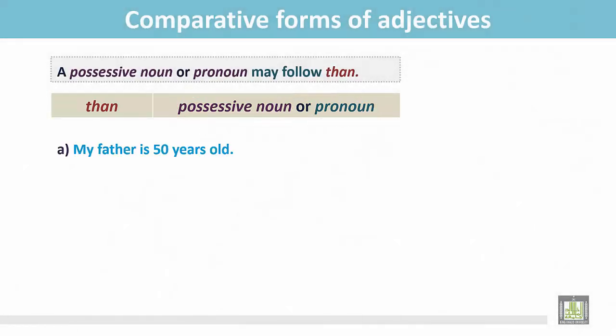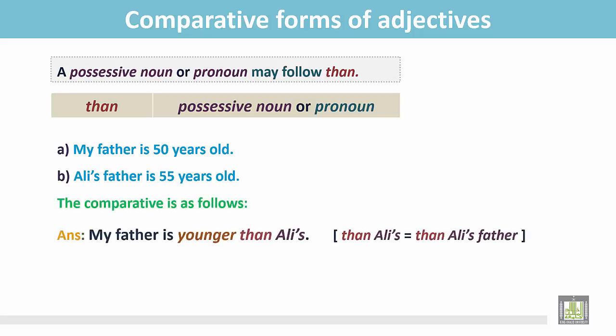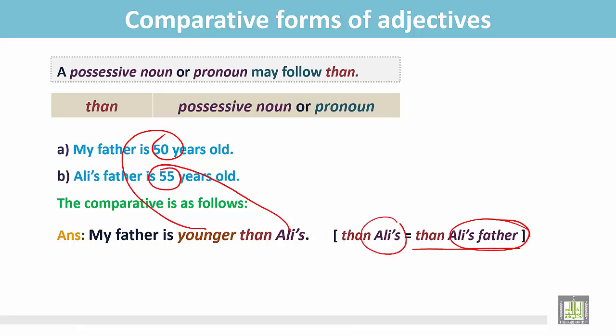My father is 50 years old. Ali's father is 55 years old. Comparing these two sentences, the comparative is: my father is younger than Ali's. We do not write 'than Ali's father' — we write 'than Ali's', and it is a possessive noun.